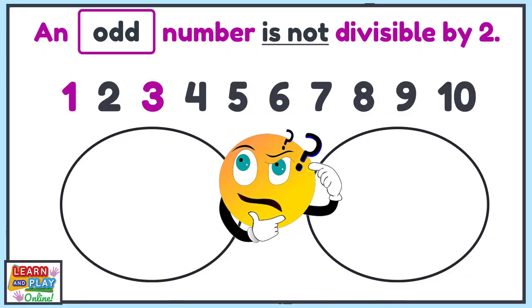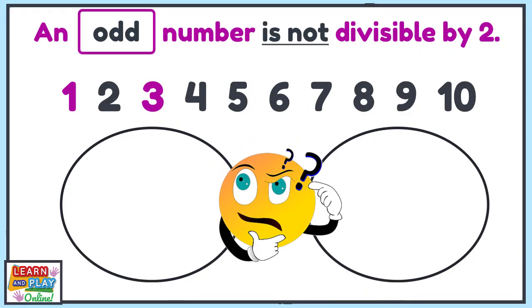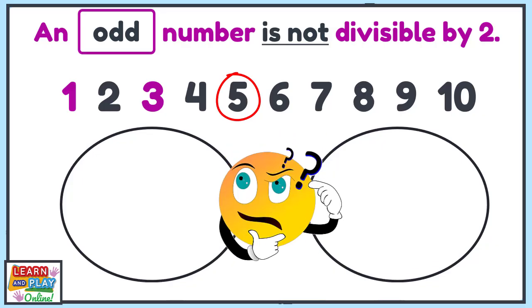Let's try and think of what the next odd number would be. Can you see a pattern evolving? If you said that the next odd number is 5, then you are correct. Do you remember how to explain why 5 is an odd number?